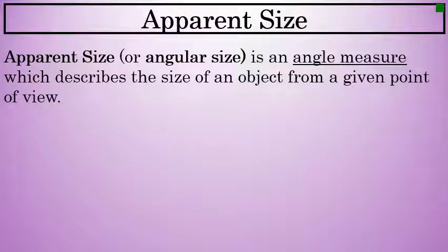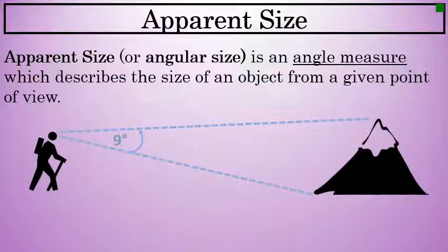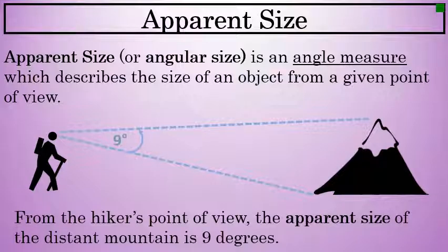Let's talk about apparent size. Apparent size, also known as angular size, is an angle measure describing the size of an object from one's point of view. Here we see a hiker observing a mountain in the distance. From the hiker's point of view, the apparent size of the mountain is 9 degrees.